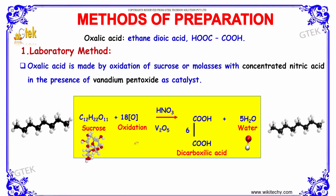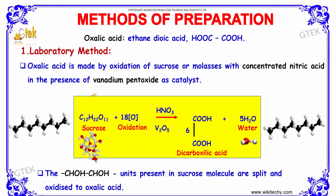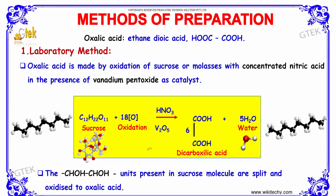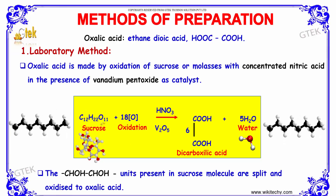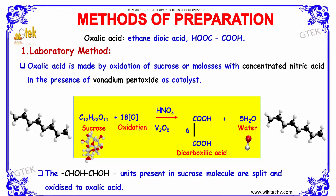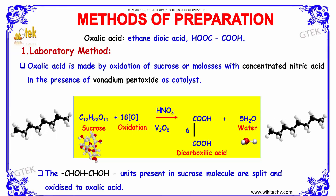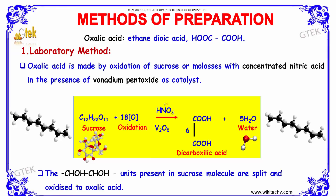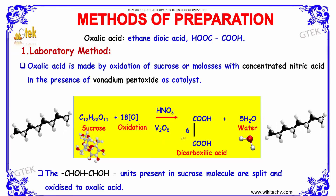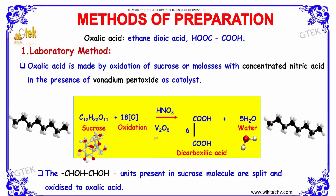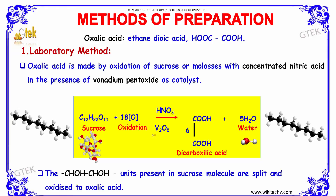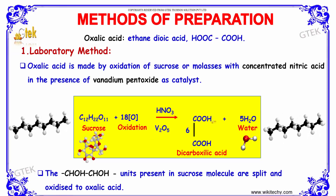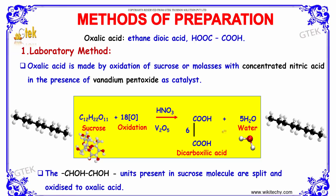Now let us discuss about the methods of preparation. In the laboratory method, oxalic acid is made by the oxidation of sucrose with the addition of 18 moles of oxygen using concentrated nitric acid in the presence of vanadium pentoxide as a catalyst. It results in the formation of dicarboxylic acid along with five molecules of water.